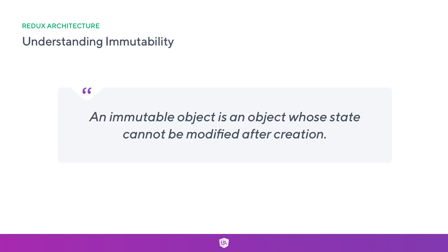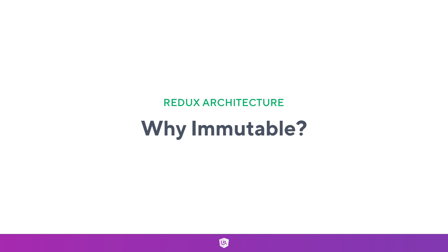So the flow is: assume we created const todo with a label of 'eat pizza' and we want to change this label. Instead of doing todo.label equals something, we actually make a copy of it, change the label in the copy, and reassign it. We'll walk through this in more detail, but first we need to understand why immutable.